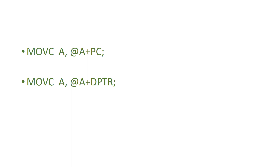For example, 'MOVC A, @A+DPTR' — the accumulator content and the DPTR content are added together to form an address. The data at that address in code memory is fetched into the accumulator. This is the indexed addressing mode using DPTR.